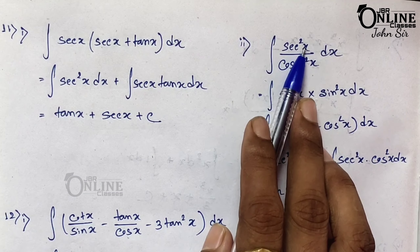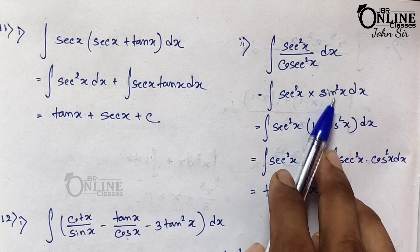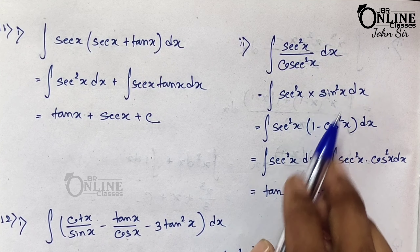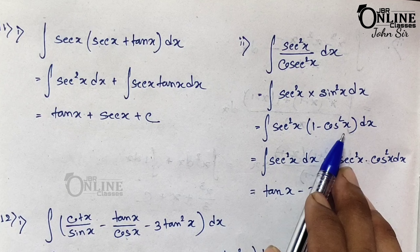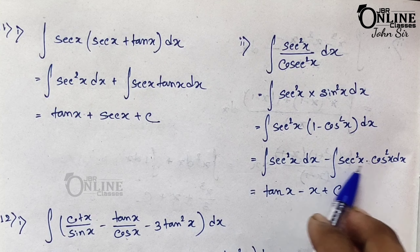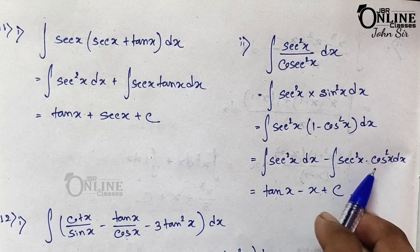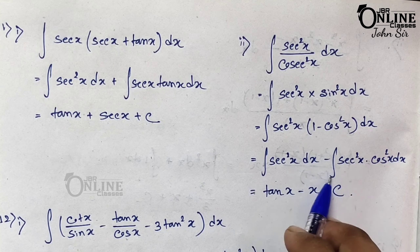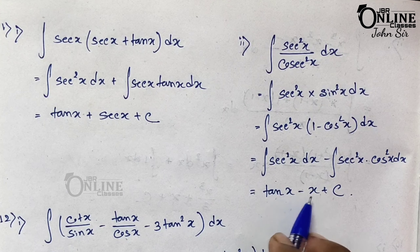Next: integration of sec²x / cosec²x. Now 1/cosec²x equals sin²x, so this becomes sec²x · sin²x. Now sin²x = 1 − cos²x, so multiply sec²x with (1 − cos²x). It gives sec²x minus sec²x·cos²x. Integration of sec²x is tan x, and sec²x·cos²x: cos²x = 1/sec²x so sec² cancels, leaving just ∫dx = x. So the answer is tan x − x + c.